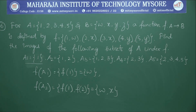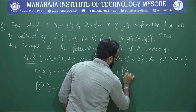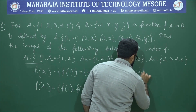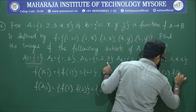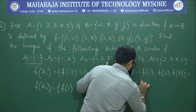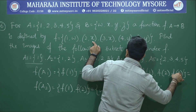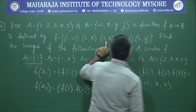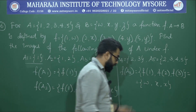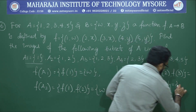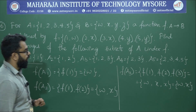For A3 = {1, 2, 3}, we compute f(1), f(2), and f(3). The image of 1 is w, image of 2 is x, and image of 3 is x again. Multiple occurrences of the same element in a set do not add extra weight, so we reduce it to a single occurrence: the image of A3 is {w, x}.